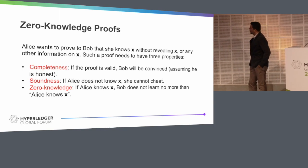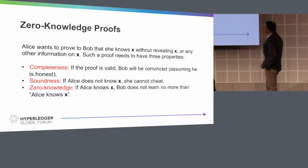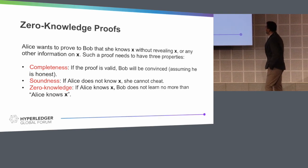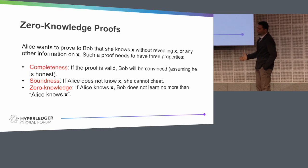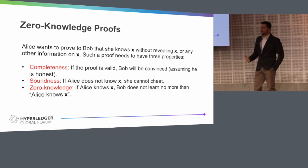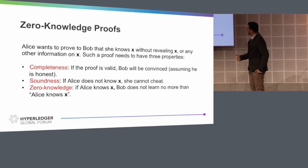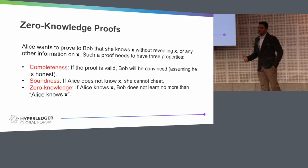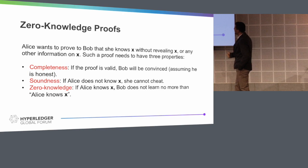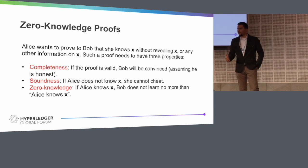To get into Zero Knowledge Proofs: suppose Alice wants to prove to Bob that she knows X, and she doesn't want to reveal the value of X to Bob. Such a proof needs to have three properties. First, completeness — if the proof is valid, Bob will be convinced at the end, assuming he is honest. Second, soundness — if Alice doesn't know X, she cannot cheat. And third, zero knowledge — if Alice knows X, Bob learns no more than the information that Alice knows X.